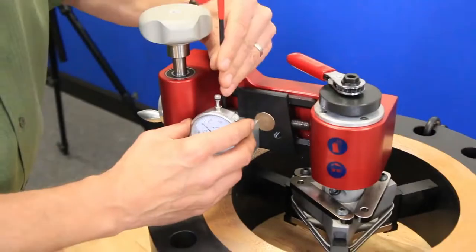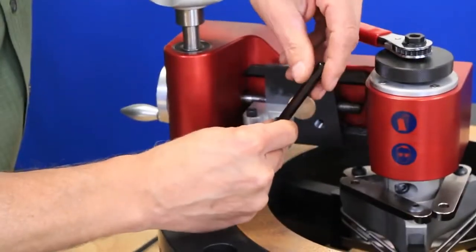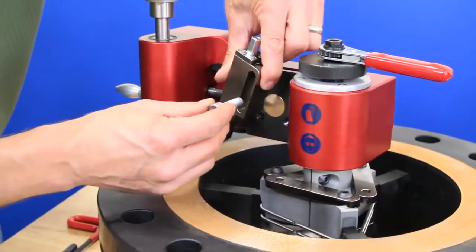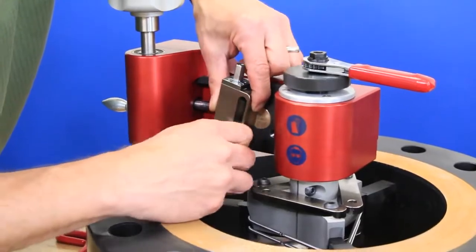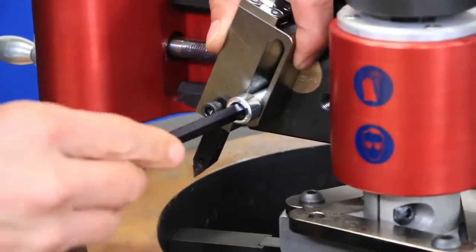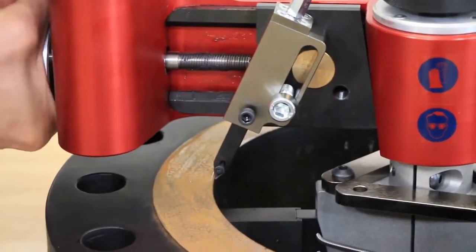Now that the flange hog has been indicated and squared, we will remove the indicator and attach our tool post assembly insert and insert holder. Setup with these components on the larger flanges is the same as in our first example, but we do suggest checking the travel of the carriage once the tool post assembly is attached to make sure that there is no interference between the tool post assembly and the body from angled positioning.